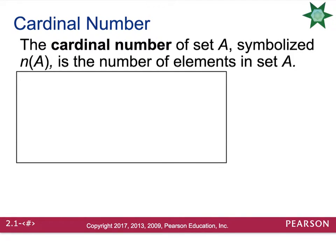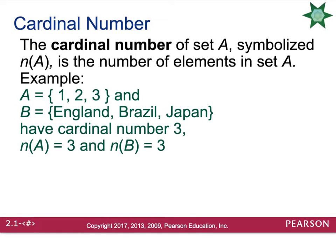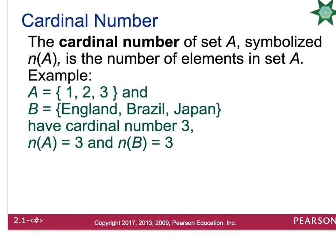Cardinal number: the cardinal number of a set is how many elements are actually in the set. The way they'll ask you for the cardinal number is they'll put an N and then the name of the set in parentheses — that notation is just asking you how many elements are in the list. For example, Set A has the numbers 1, 2, and 3, so the cardinal number of Set A is 3. If Set B lists England, Brazil, and Japan, again only 3 items are in the set, so its cardinal number is also 3.